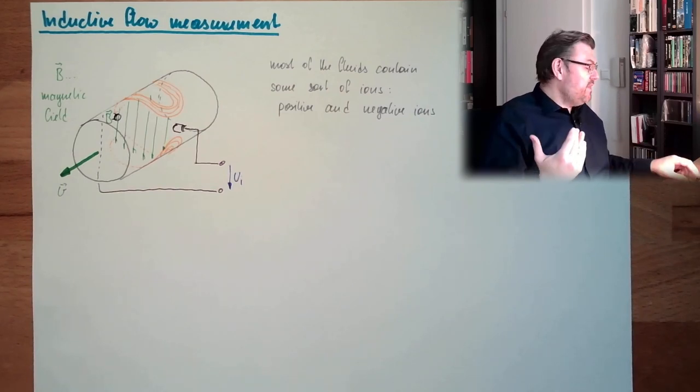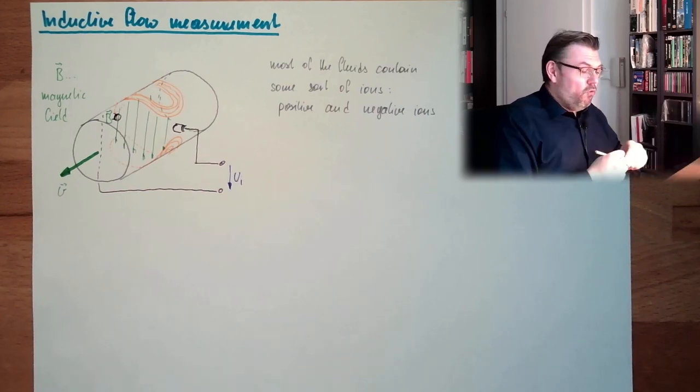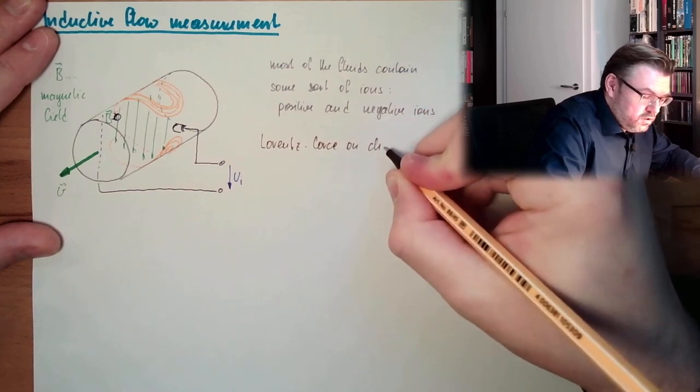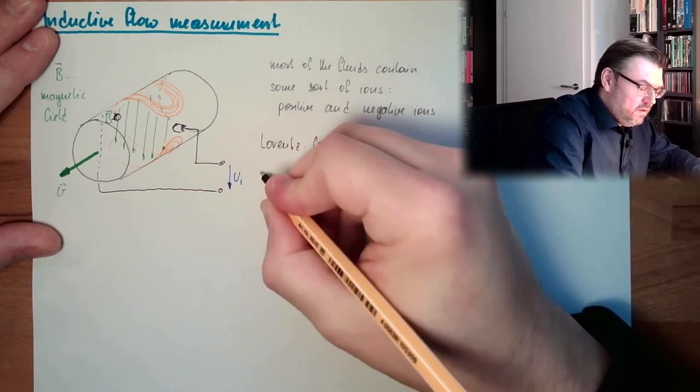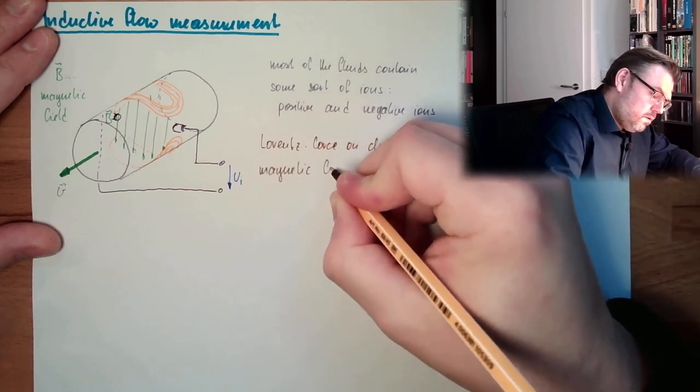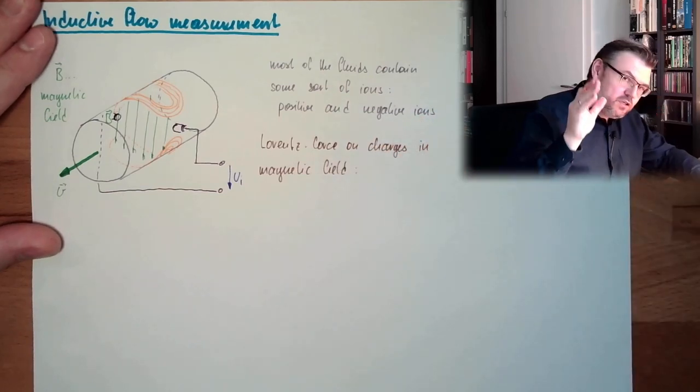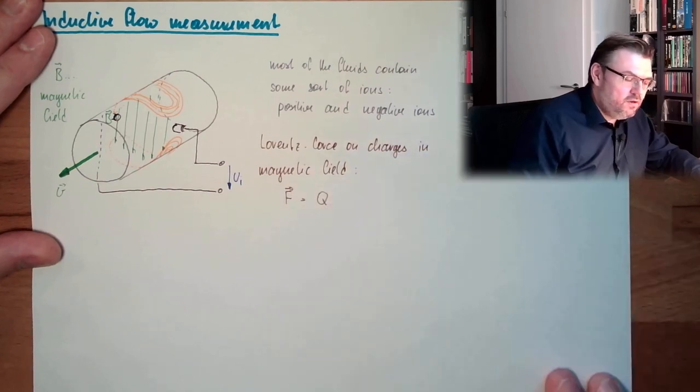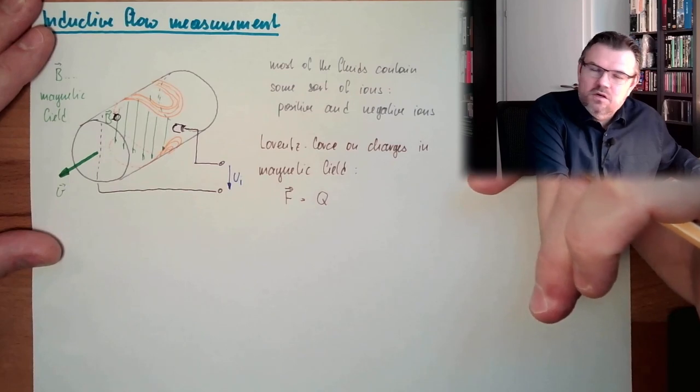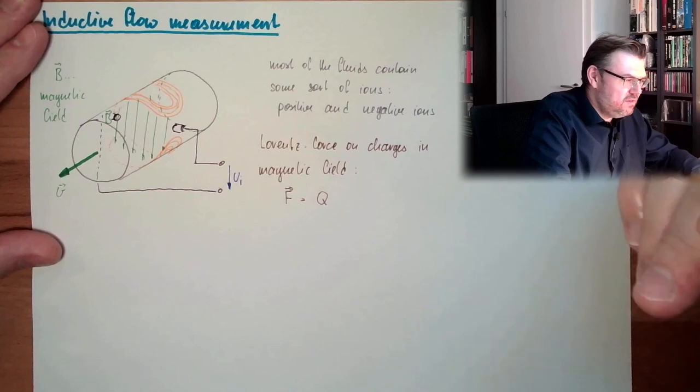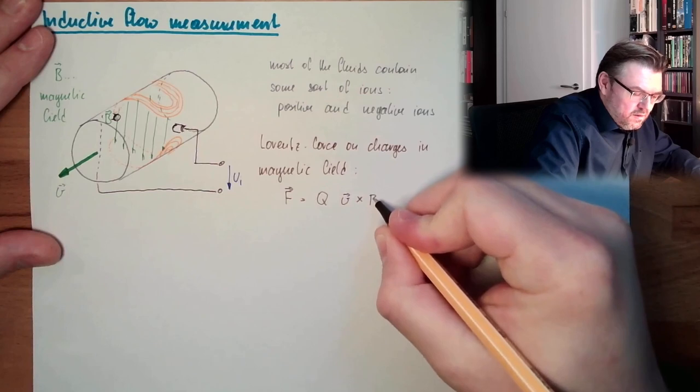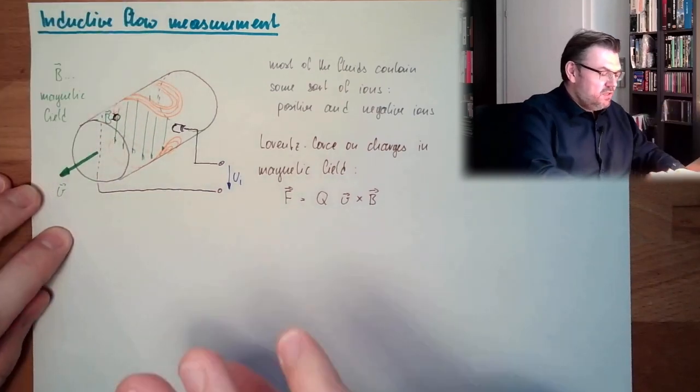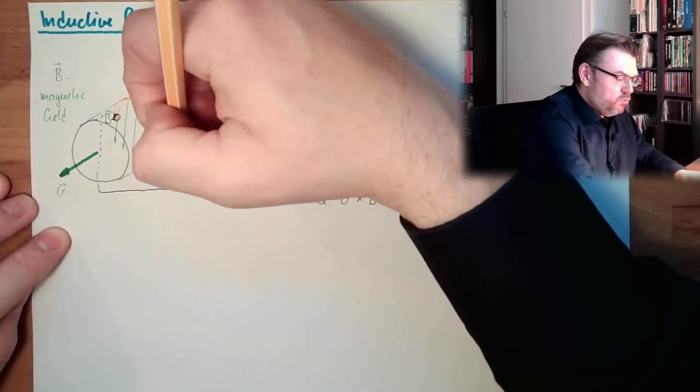And there is the force, the Lorentz force, on charges in magnetic field. If the charges are moving through a magnetic field there is a force applied, which is the charge. In case of an ion, this would be, for instance, one element of the charge or two, depending on what grade the ion is. And then there is the velocity cross B. Since the velocity is in this direction and B is in this direction, velocity cross B means the force on positive charges would go to this direction.